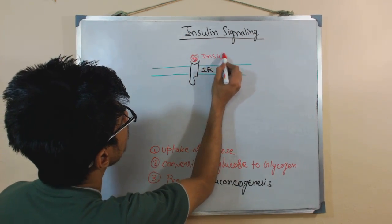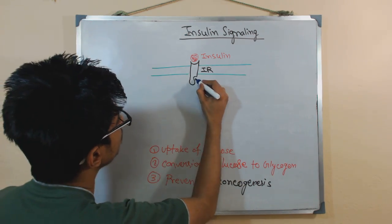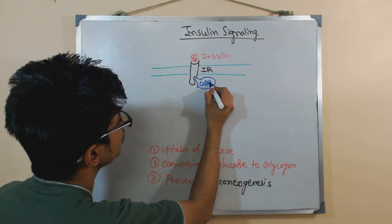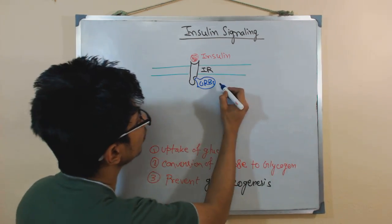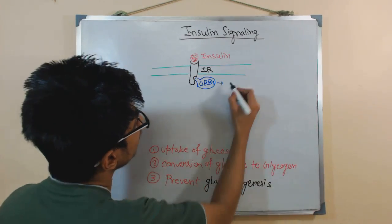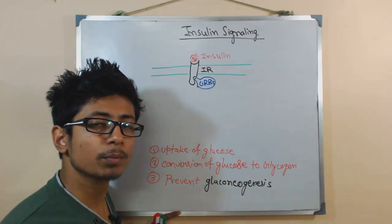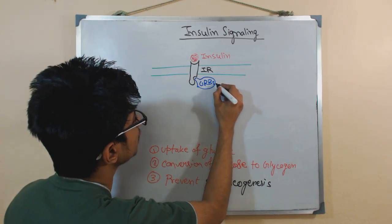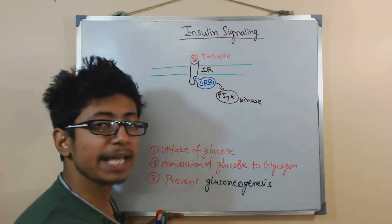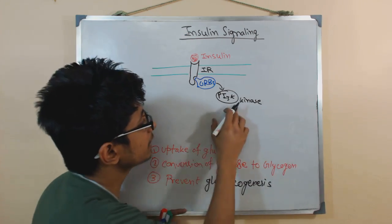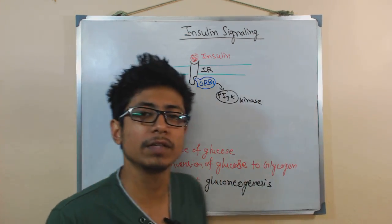Once insulin binds with the insulin receptor (IR) present in the cell membrane, it activates downstream signaling. A key protein called AKT gets activated through a protein called PI3 kinase — phosphatidylinositol 3-kinase. PI3 kinase is a kinase, meaning it can activate other proteins inside the cell by phosphorylation. PI3 kinase is present in the cell membrane because phosphatidylinositol is a lipid embedded inside the membrane.